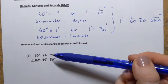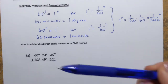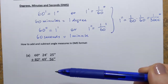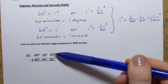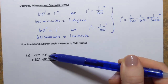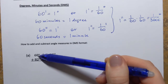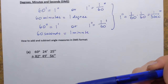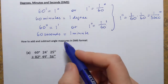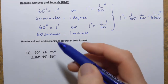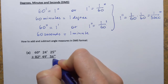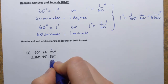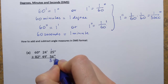The way we add is: first, align the angle measures, which is already done here. Then we add seconds, then minutes, then degrees. Adding the seconds: 5 plus 6 is 11, write 1, carry over 1; 2 plus 5 is 7, plus 1 is 8. That gives 81 seconds.